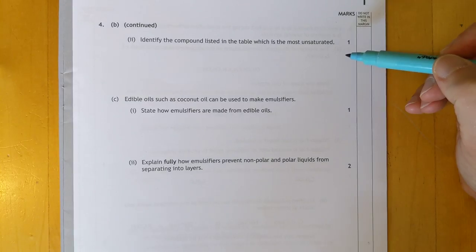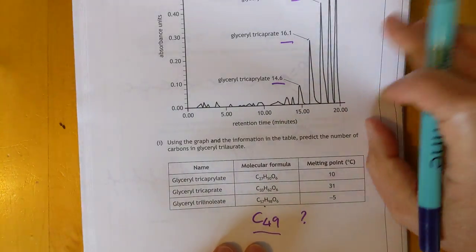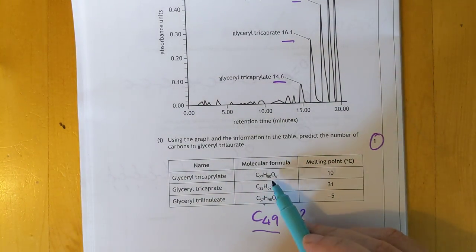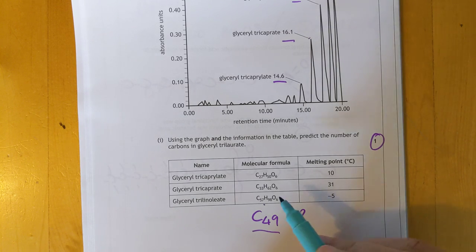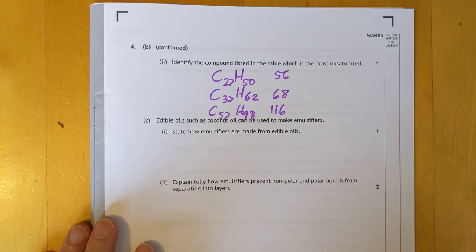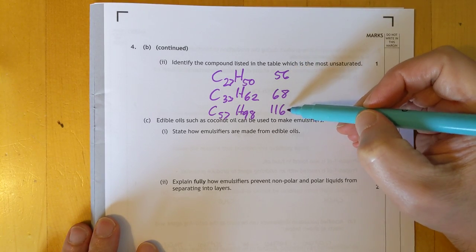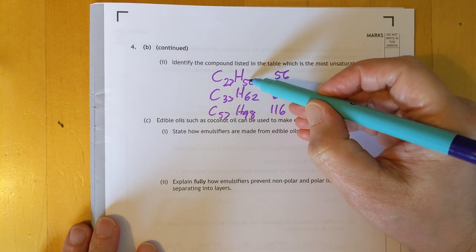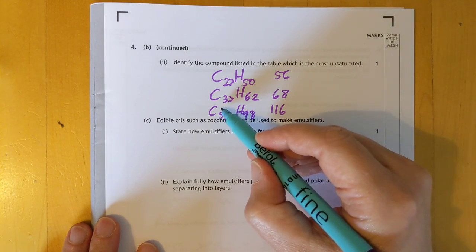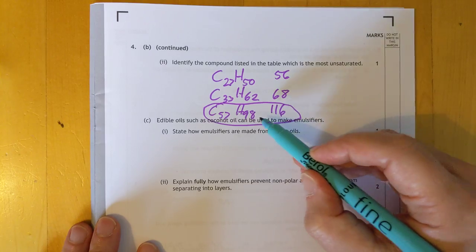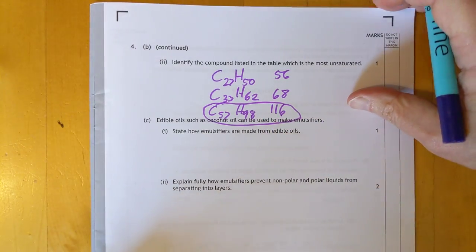Not totally convinced, but that's only one mark. So I'm going to guess they're going to accept a decent amount of leeway on that. But hopefully you can see what I've done with the jump in retention time. Matching that up to this corresponding, approximately corresponding jump, and the difference in the number of carbons. Identify the compound listed in the table, which is the most unsaturated. That's the ratio of hydrogens to carbons, then. This one here has got the largest difference in hydrogens, so therefore it's the most double bonds.